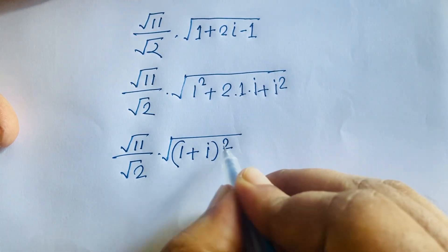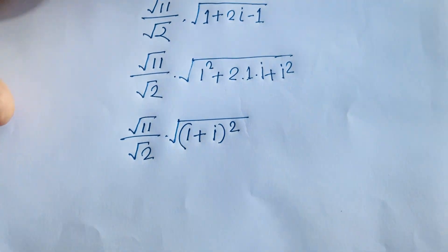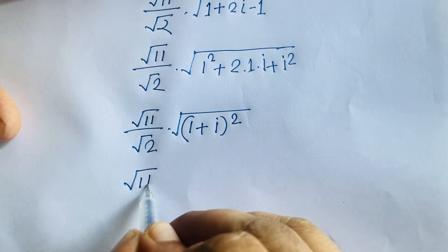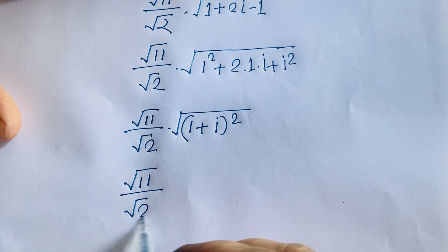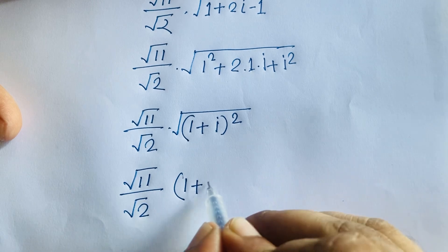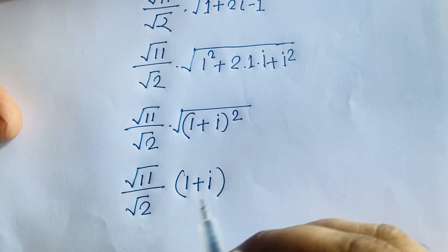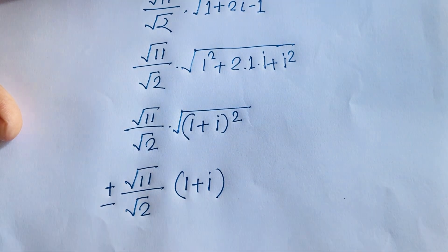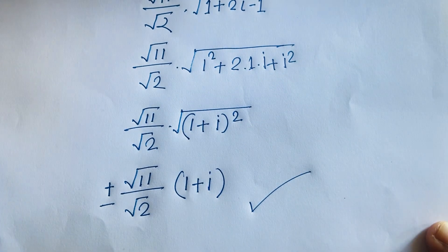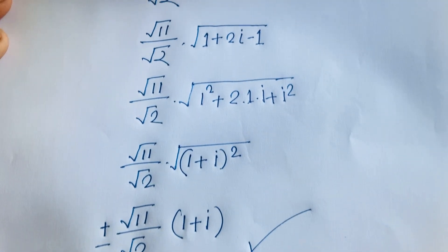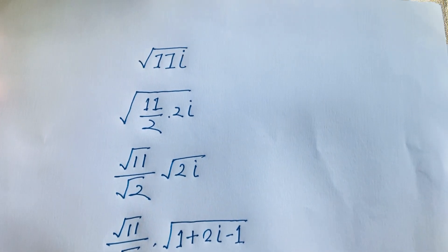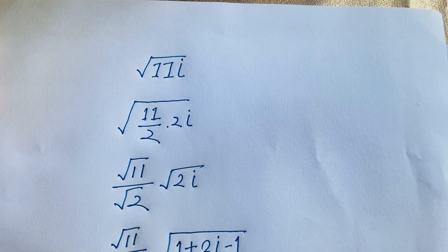The square roots cancel, and our final answer is plus or minus square root of 11 over square root 2, times (1 + i). That is our final answer. Thank you all — if you enjoyed this video please subscribe to my channel for other interesting videos. Goodbye, take care.